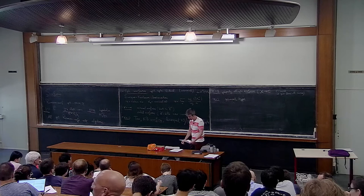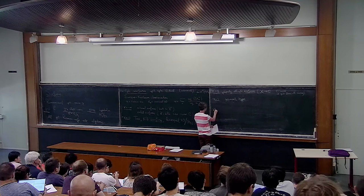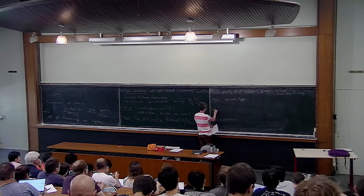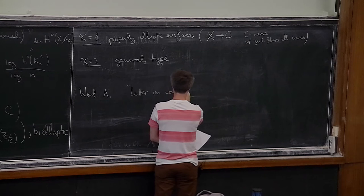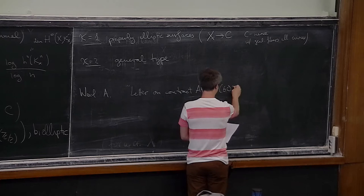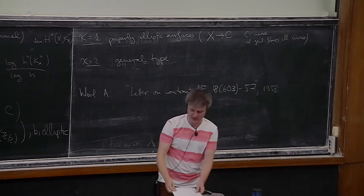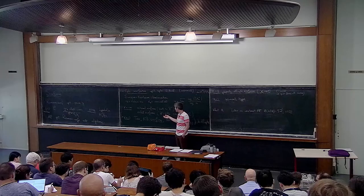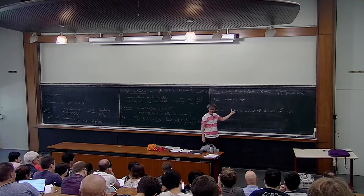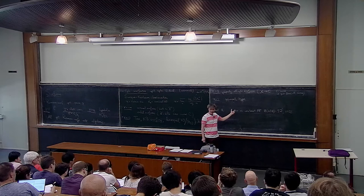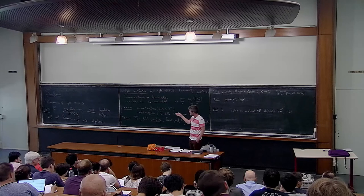There's a very nice reference for thinking about the questions that relate Riemann surfaces and complex surfaces: a letter by Weil called 'Final letter on contract AF 18603-57,' written in 1958, where he talks about K3 surfaces. In fact, K3 surfaces were named by André Weil in honor of the mountain K2, and the mathematicians Kummer, Kähler, and Kodaira. It's only five or six pages and explains quite nicely the reasons behind questions about K3 surfaces and how they relate to Teichmüller spaces.